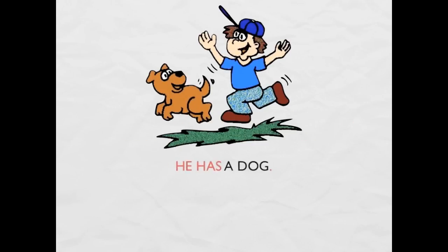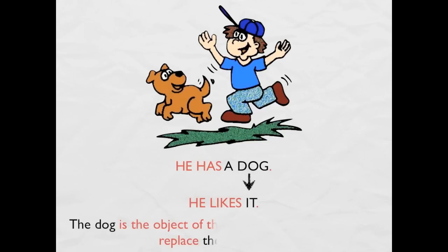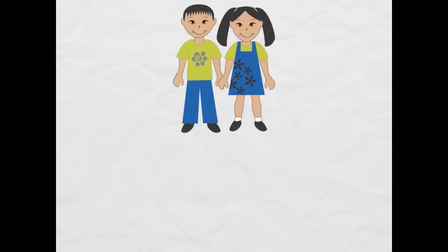For example: he has a dog. I can substitute 'dog' for 'it' — he likes it. The dog is the object of the first sentence, so you can substitute it.